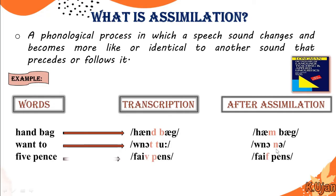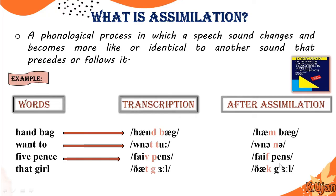Another example is 'five pans' — the sound changes in connected speech. And another example is 'that girl' — the /t/ is going to be changed to a /k/ sound, so 'that girl' becomes /ðæk gɜːl/. This change of sound in connected speech is known as assimilation.